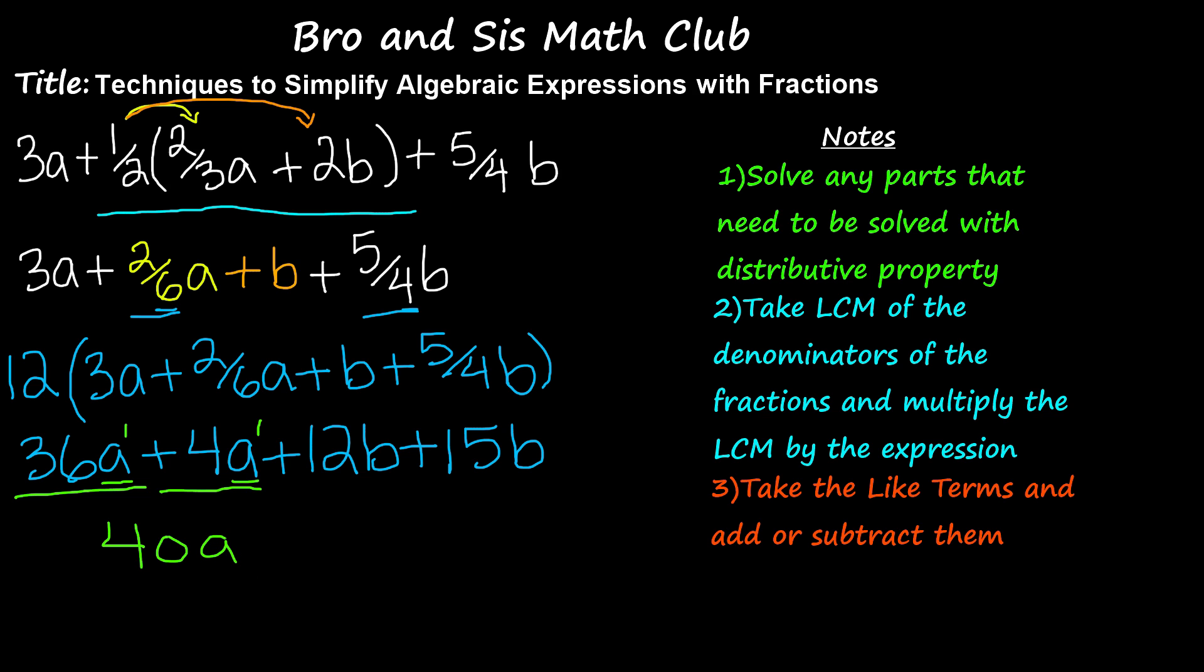And then the other two like terms are 12B and 15B. The reason they are like terms is because they share the same variable, which is B and B, and they share the same power of that variable, which is 1 and 1. So 12B plus 15B gives us 27B. And so 40A plus 27B is the simplified form of our algebraic expression with fractions.